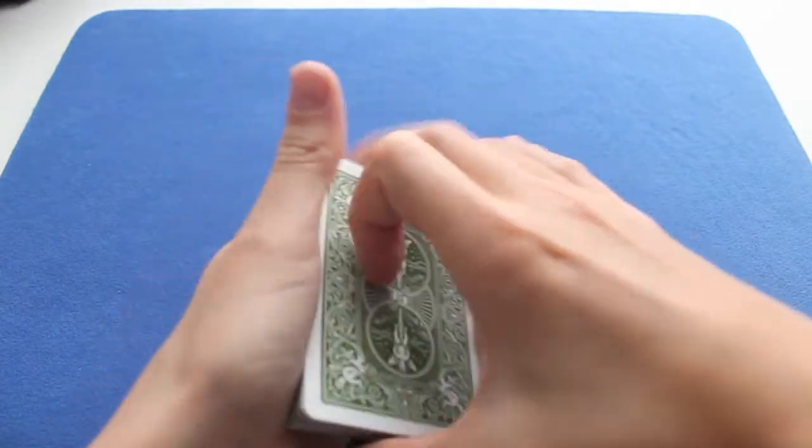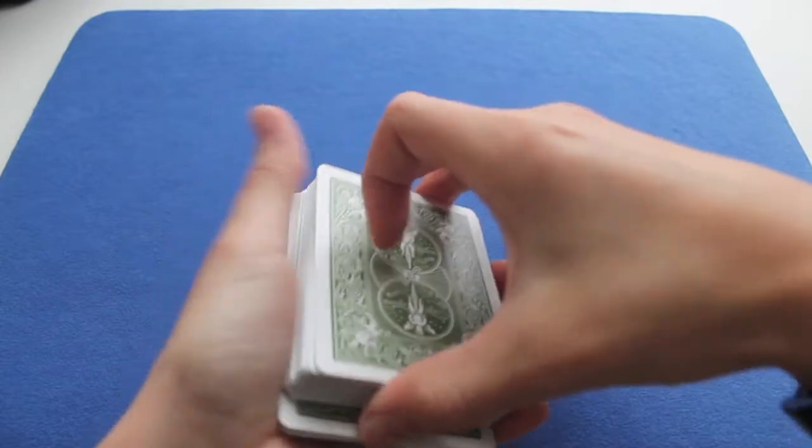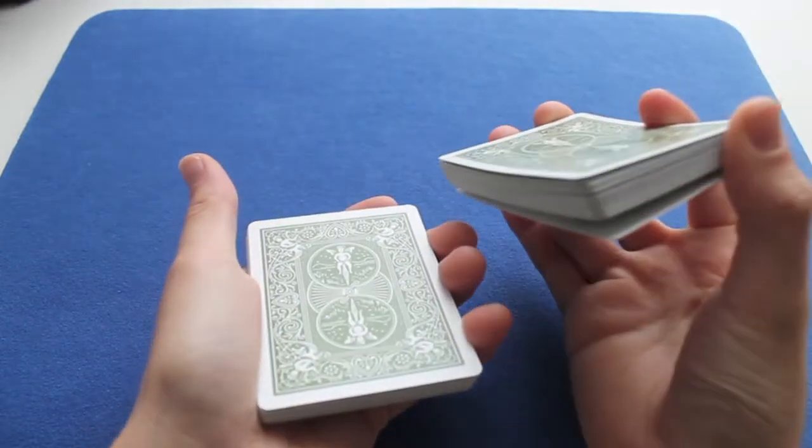You tell the spectator the cards are front to back, back to front. Somewhere near the middle, you should have a line, like a separation right there. And you flip the cards like this.